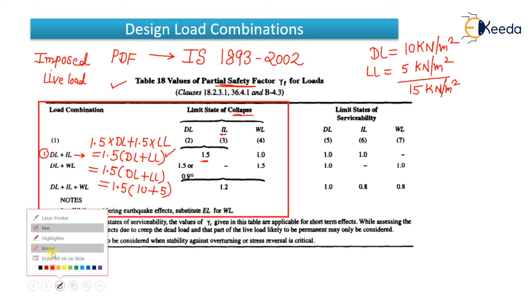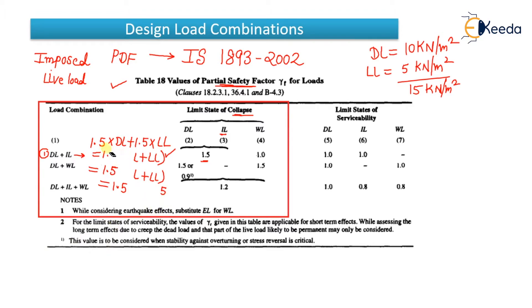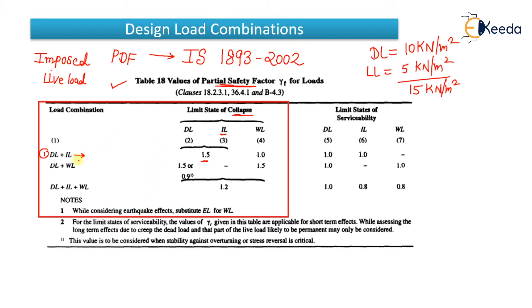Now the second combination: dead load plus wind load. For this combination, you have to multiply dead load by 1.5 or 0.9, and wind load by 1.5.